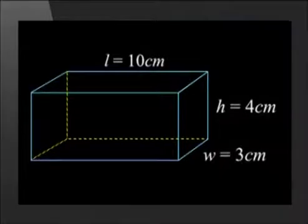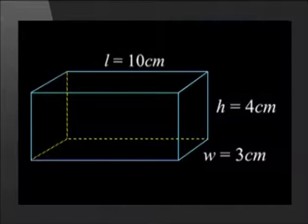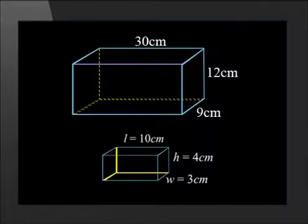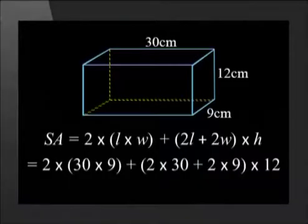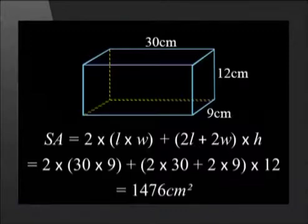Let us also revise the effect on area of multiplying the dimensions of a prism by a scale factor k. We use our last example where the surface area of this rectangular prism worked out to be 164 cm². We multiply each of these dimensions by a scale factor of 3, giving us 30 cm for the length, 12 cm for the height, and 9 cm for the width. Let us use the general formula for surface area to calculate this new surface area. We substitute in the new values and find the new surface area to be 1476 cm². Now, let us compare the old surface area to the new one and see if we can determine the relationship between the values and the scale factor of 3.